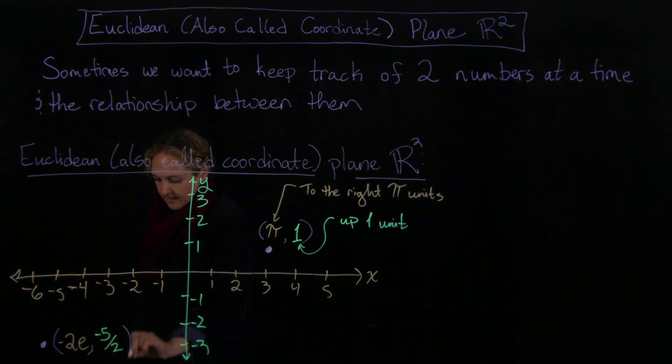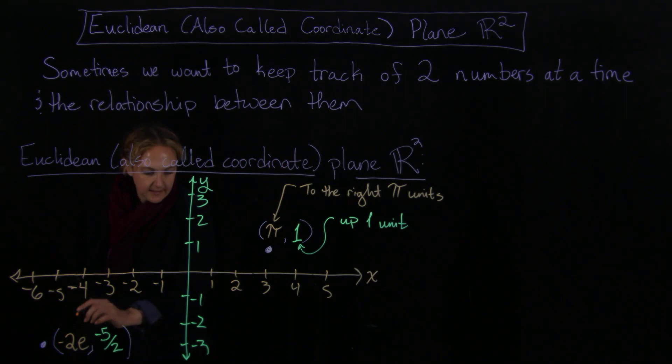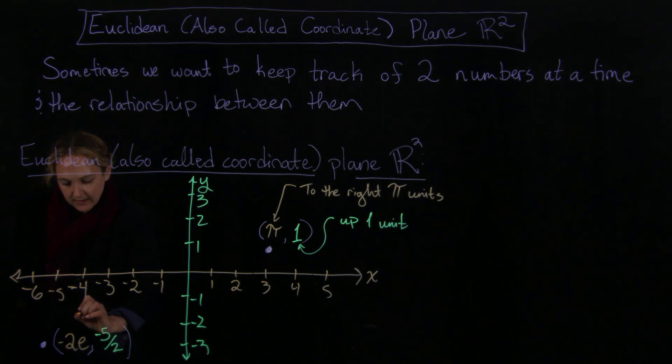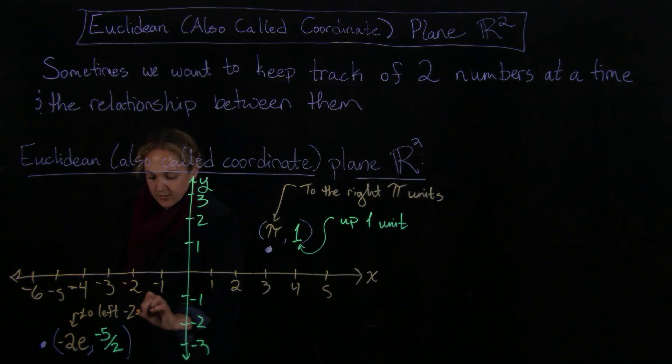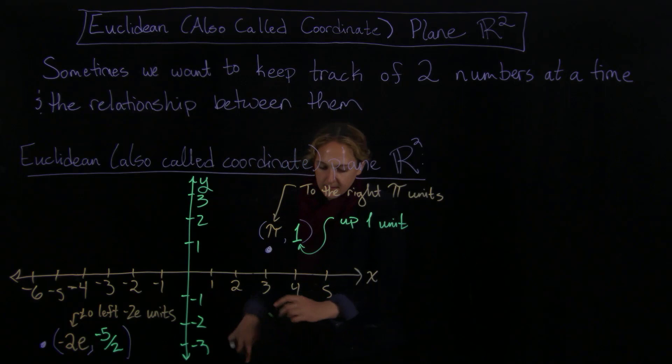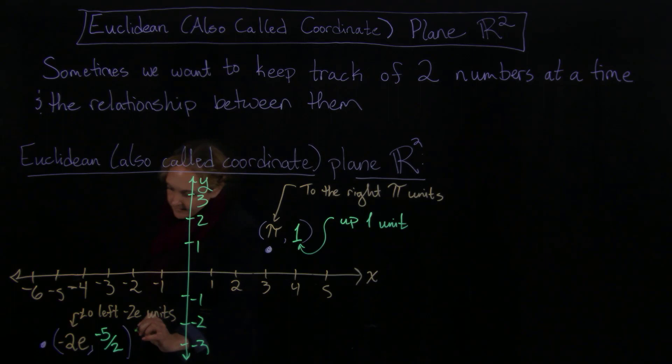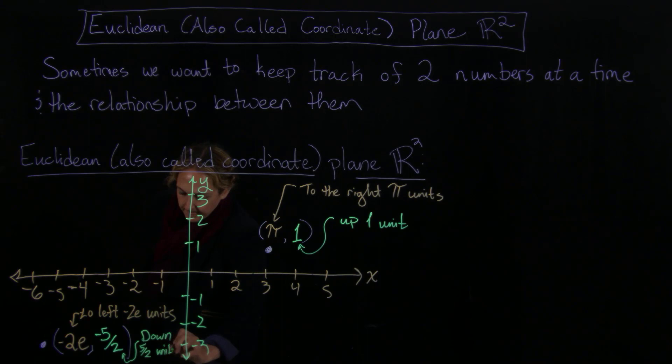So what is this telling me here? So this one here tells me I'm going to the left minus two E units. So this one tells me that I'm going, the first coordinate is my left or right. Because it's negative, it's to the left. So to the left minus two E units. And then here, this is going, because there's a minus and it's a second coordinate, this one tells me that I'm going to go down five halves units.